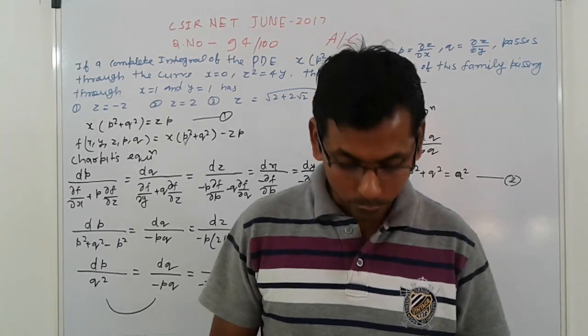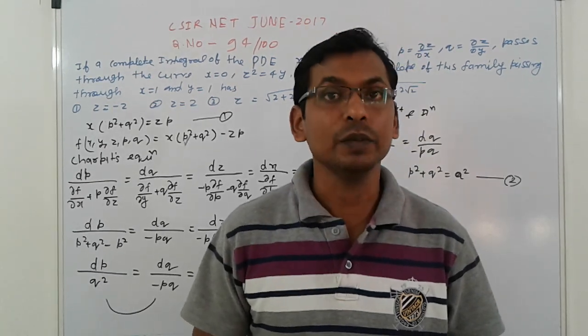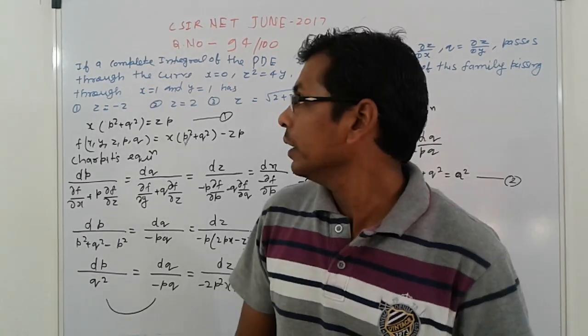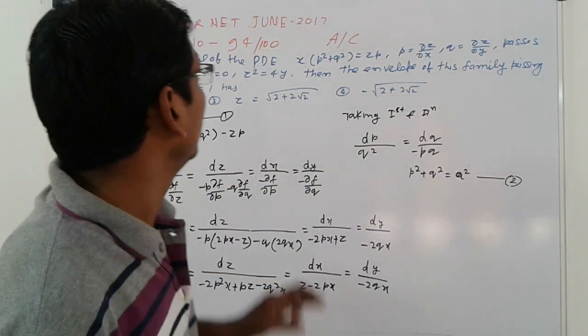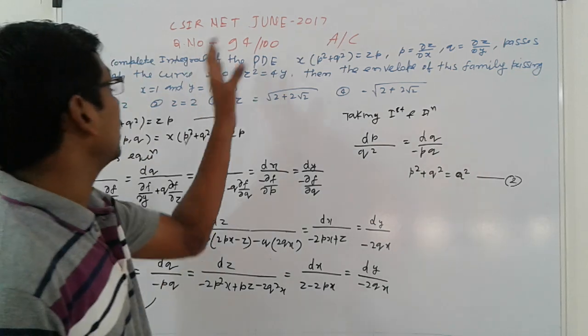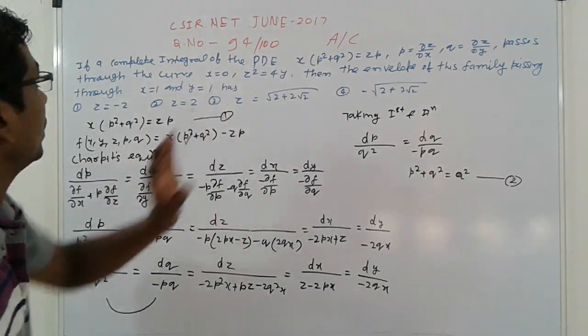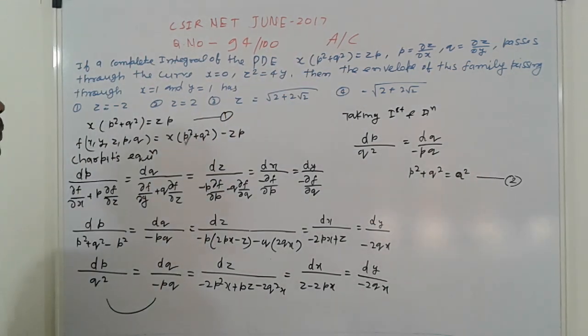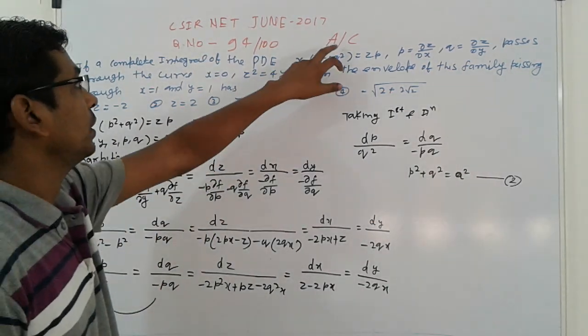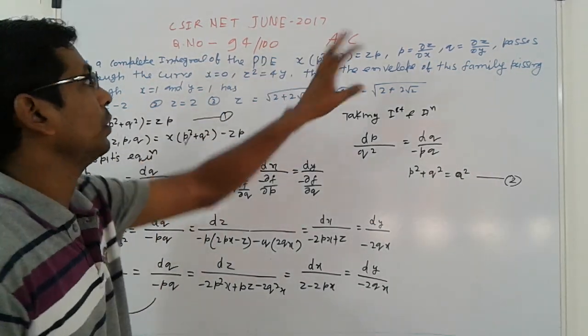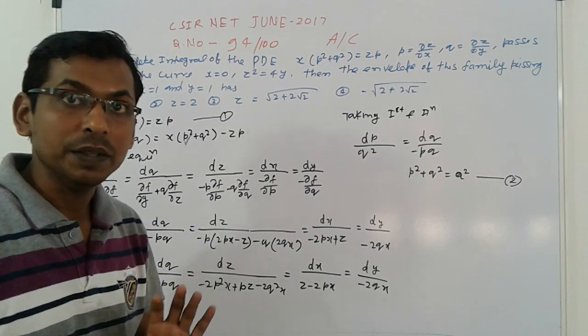Hi friends, good morning. This is an example from CSI late June, Sudhaan Set 17, question number 94, Set A — 100, Set C.